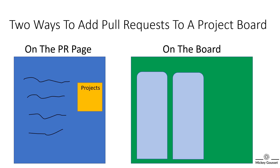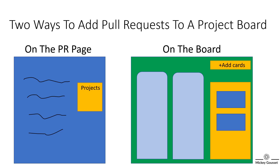The second way you can add a pull request to a board is from the board itself. At the top right of the board is an Add Cards button. Clicking this button will open a fly-out window with all the pull requests that are in repositories connected to this board. You can filter the results to find the pull request you need, then add them to the board either by dragging and dropping or using keyboard shortcuts.